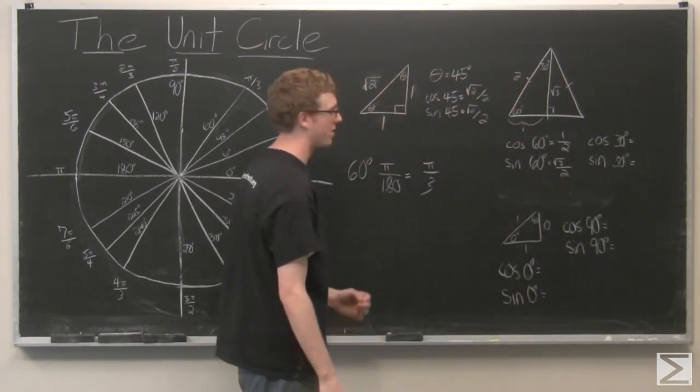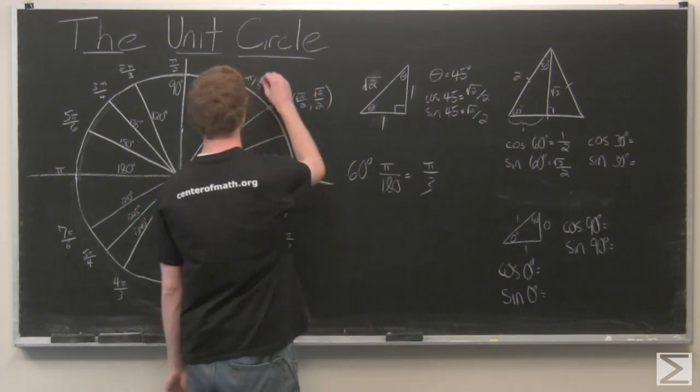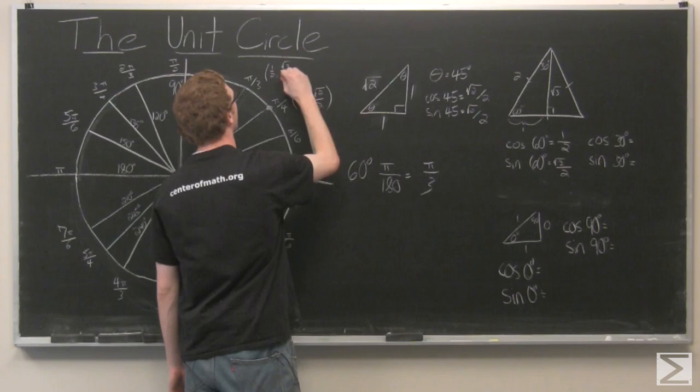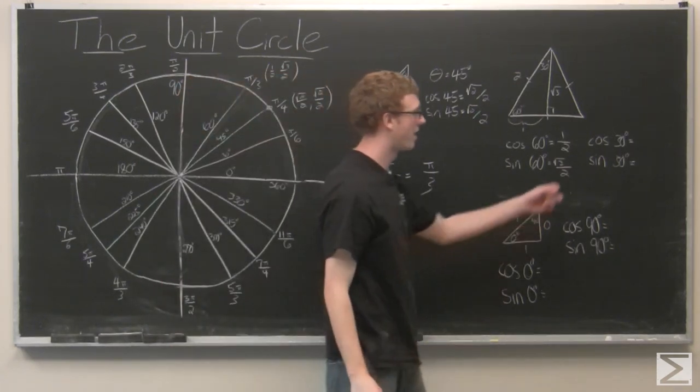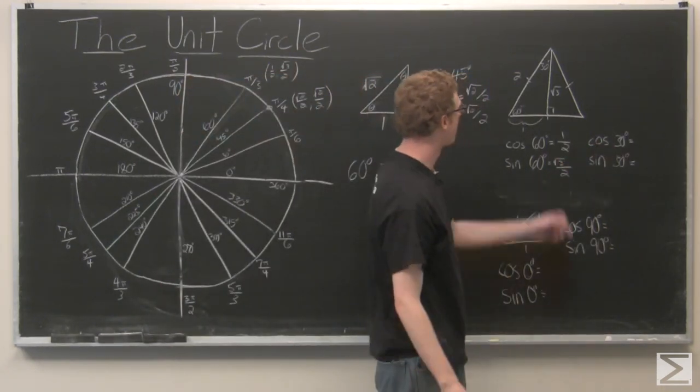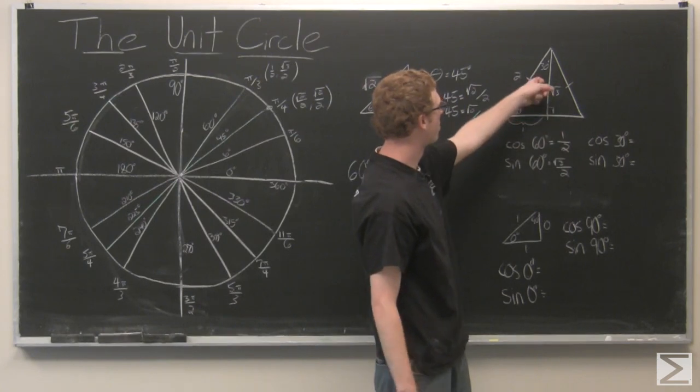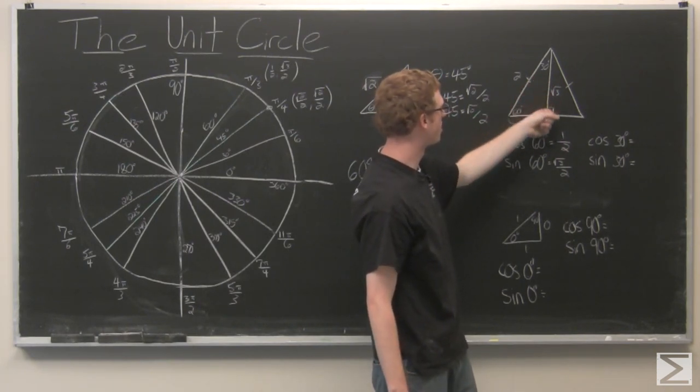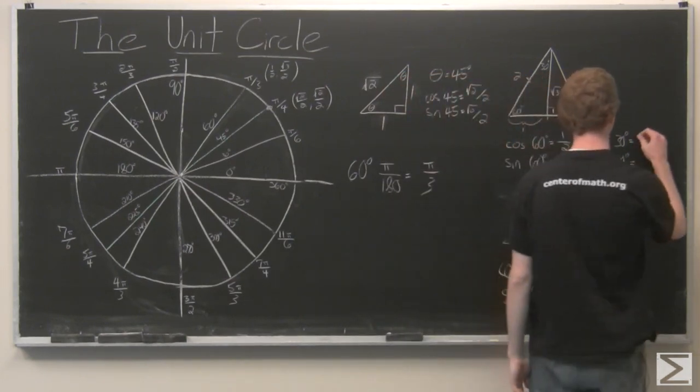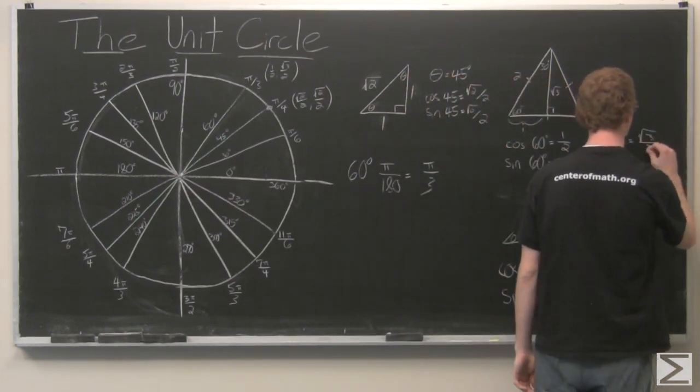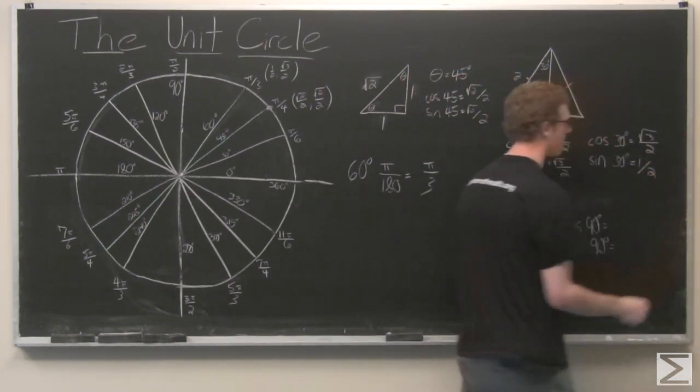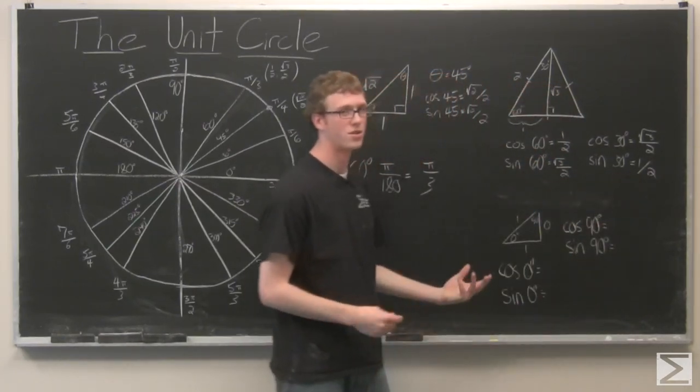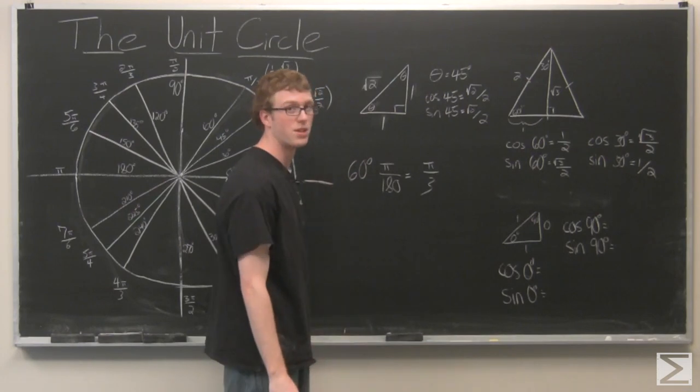So I'm going to go ahead and put these points into our circle. And last we're going to look at cosine of 30 and sine of 30. Cosine of 30 is going to be rad 3 over 2 adjacent over hypotenuse. And sine of 30 opposite over hypotenuse is one half. So we can again put these points into our unit circle.